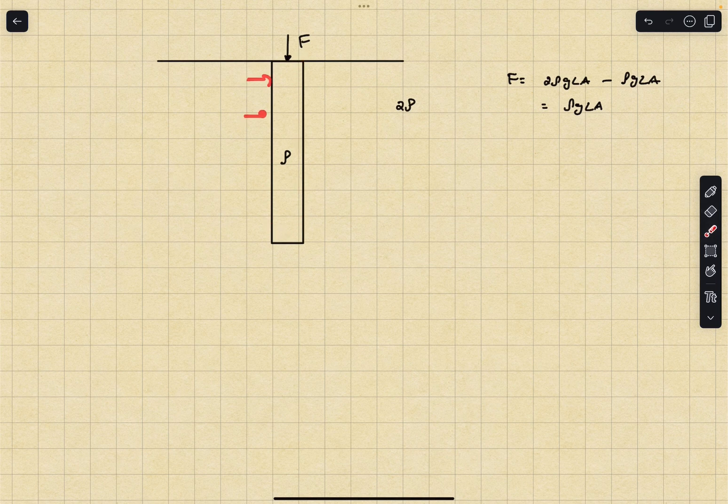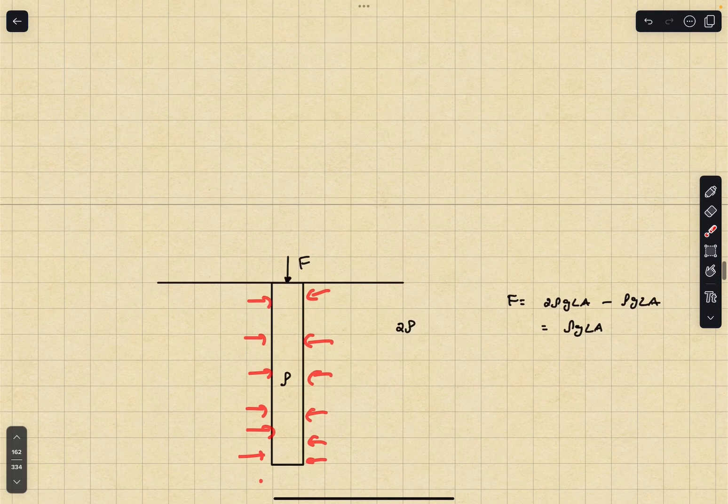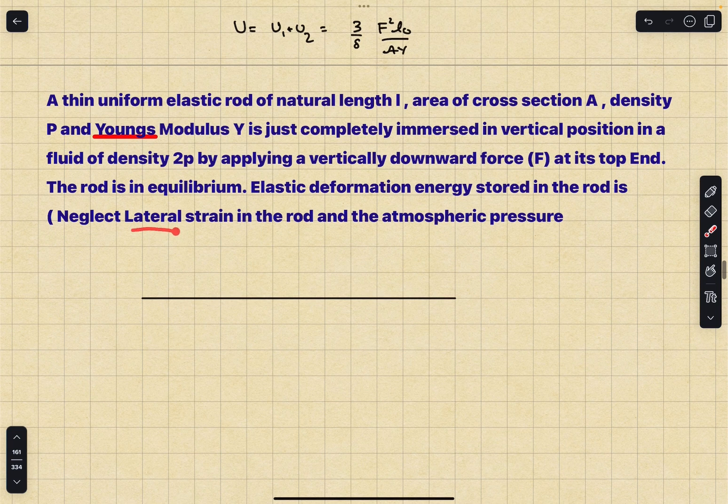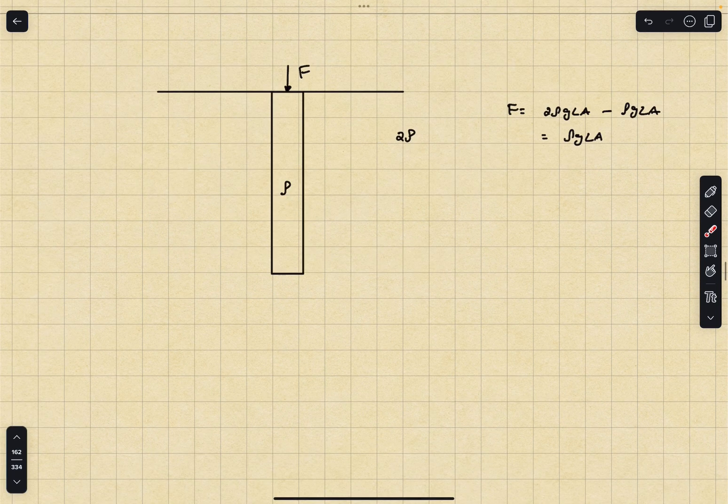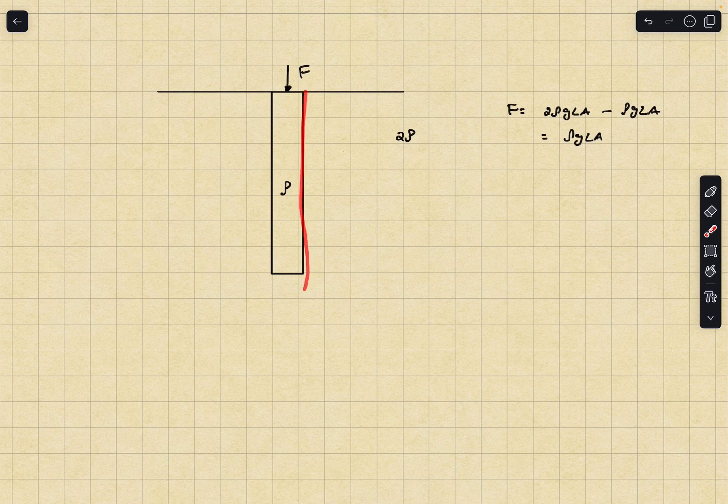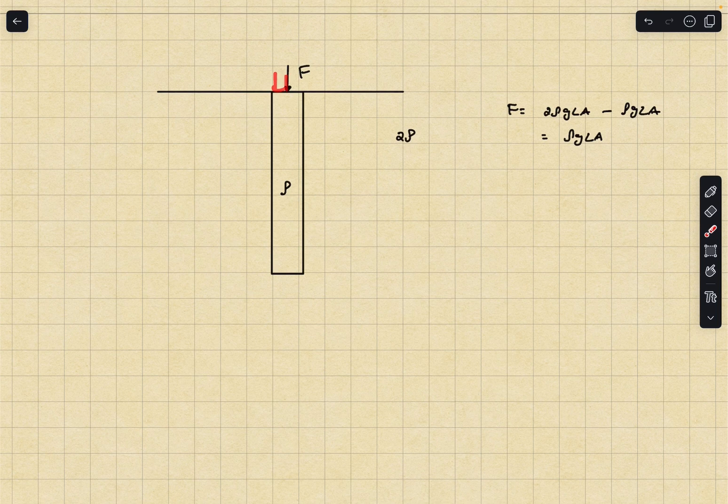It is important to pay attention to how the fluid applies pressure on the surface of this rod. Fluid is going to apply pressure throughout the force on the lateral surface of the rod. But in the problem they have mentioned to ignore the lateral strain. So we don't have to consider change in the lateral length of the rod. All we have to care about is how the axial length is changing.